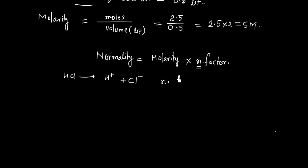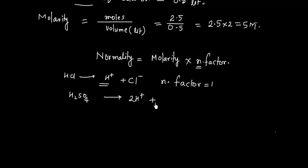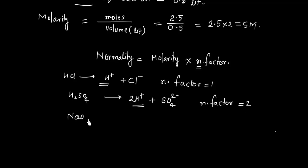For example, HCl gives 1 H⁺ and 1 Cl⁻, so its n-factor is 1. For H₂SO₄, the reaction gives 2 H⁺ and SO₄²⁻, so its n-factor is 2. The n-factor is essentially the number of H⁺ or OH⁻ ions provided by the acid or base.